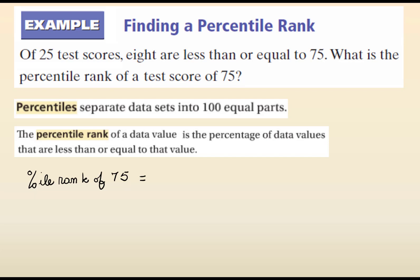So, the percentile rank of 75, because 8 are less than or equal to 75, will be 8 divided by the number of test scores, which is 25. And since we want a percent, we're going to multiply by 100. We can just cross cancel. So 25 goes into itself once and into 100 four times, and 8 times 4 is 32.